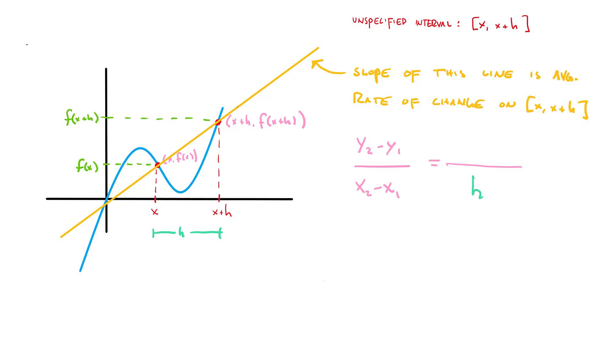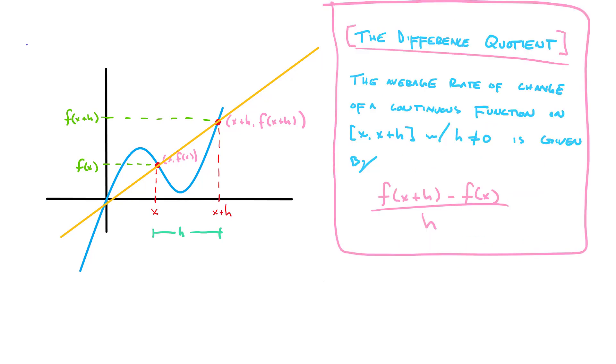The y coordinate, the y2 is f of x plus h. That's y2 minus y1, which is just f of x, and that is it. That thing is the average rate of change on the interval x to x plus h and that thing is called the difference quotient.